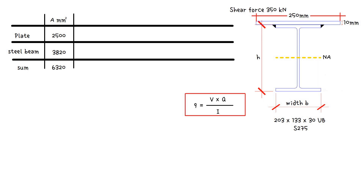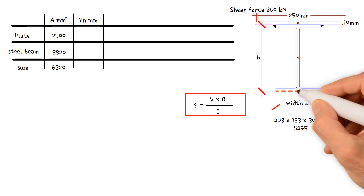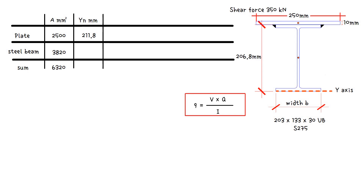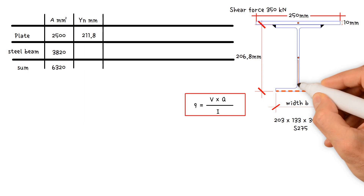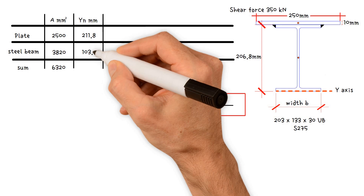In the following column, we must calculate Yn, the distances between the centroid of each area and the bottom Y axis. For the plate, Yn equals half the plate thickness (10 divided by 2, which is 5 mm) plus the height of the universal beam, 206.8 mm, giving a value of 211.8 mm. For the steel beam, Yn equals half the beam height (206.8 mm divided by 2), which is 103.4 mm.